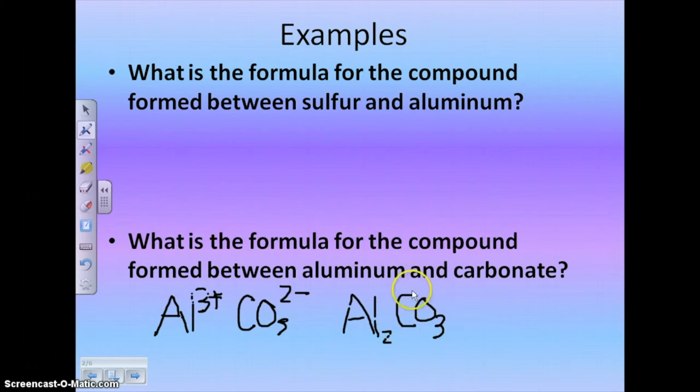Now, to indicate that we want three of the CO3s, we need to put CO3 in parentheses. There we go, there's our formula: Al2 parentheses CO3, 3.